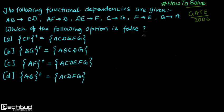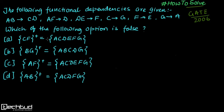The problem is very simple - we have to understand it and solve it. We have been given a few functional dependencies: AB determines CD, AF determines D, DE determines F, C determines G, F determines E, and G determines A. Now, which of the following given options is false?